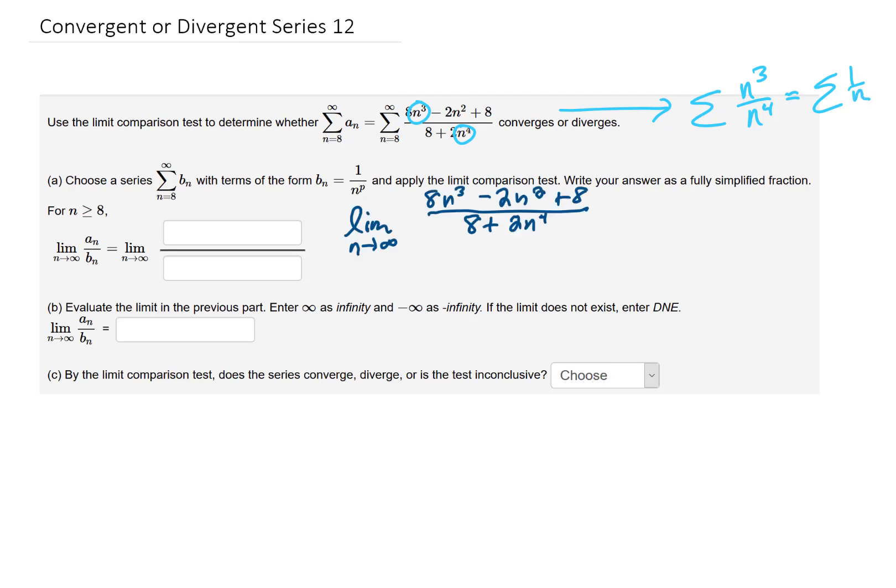To make that comparison, we're going to take the term inside of our original series and divide that by the series that we want to compare to. In this case, that's 1 over n.